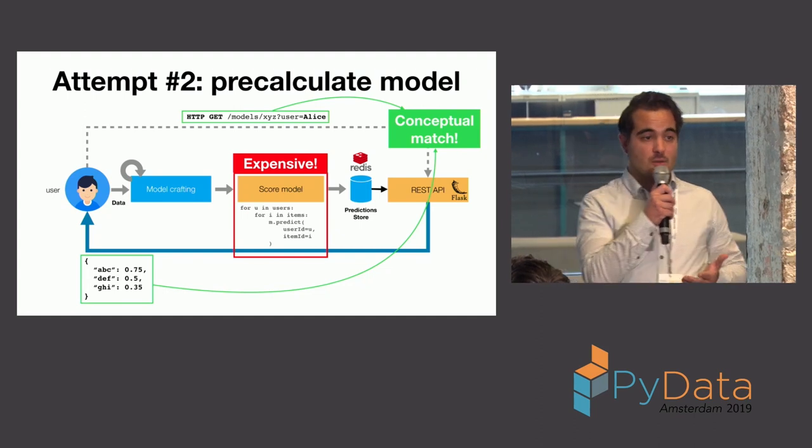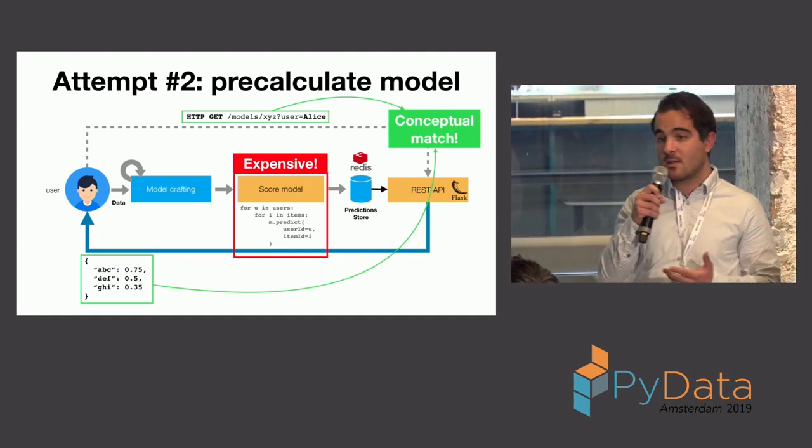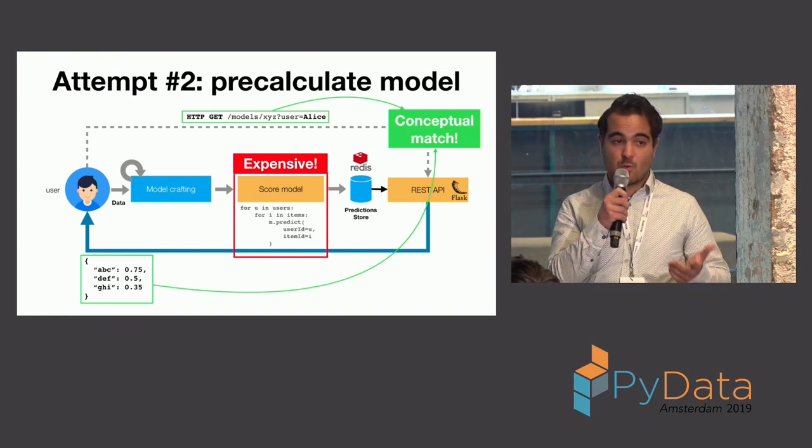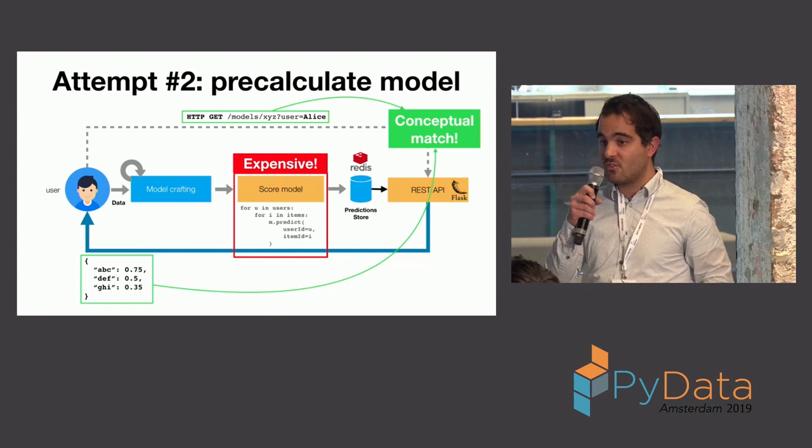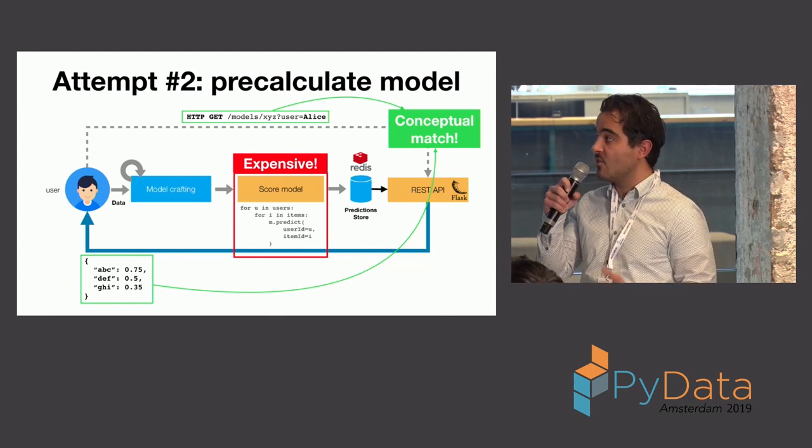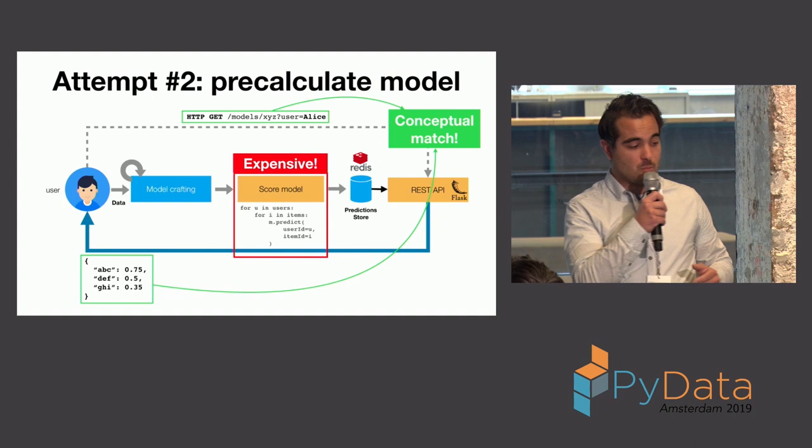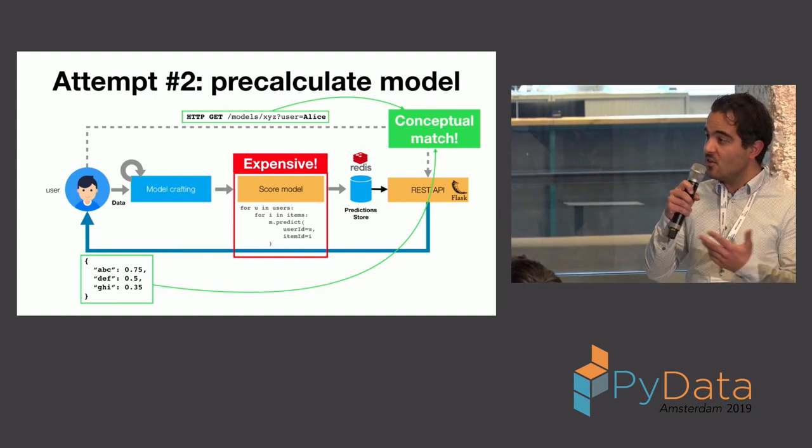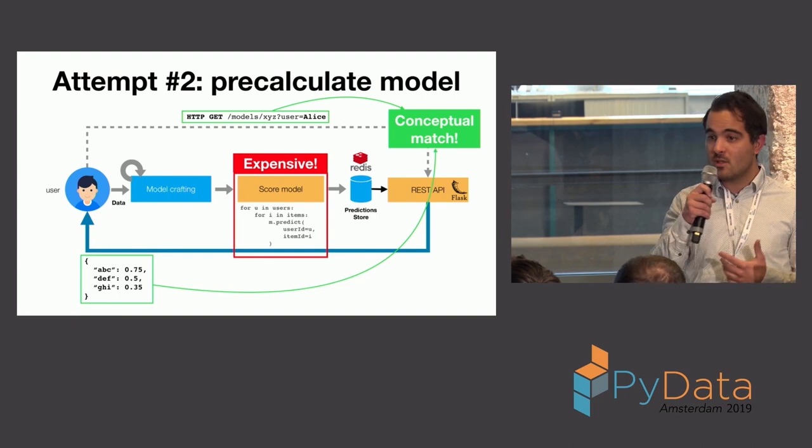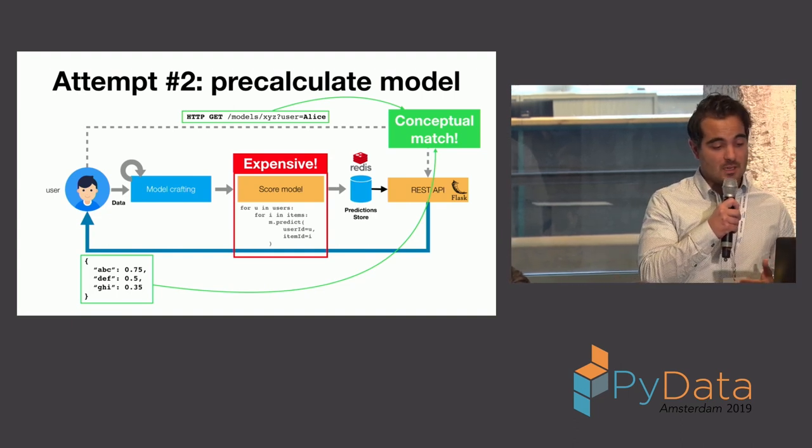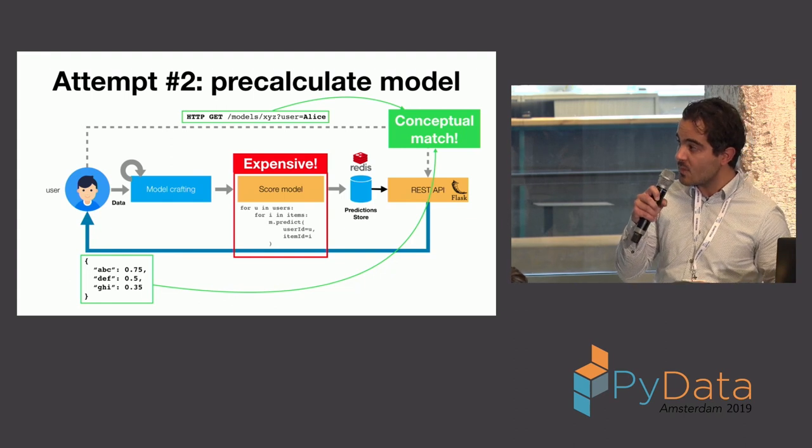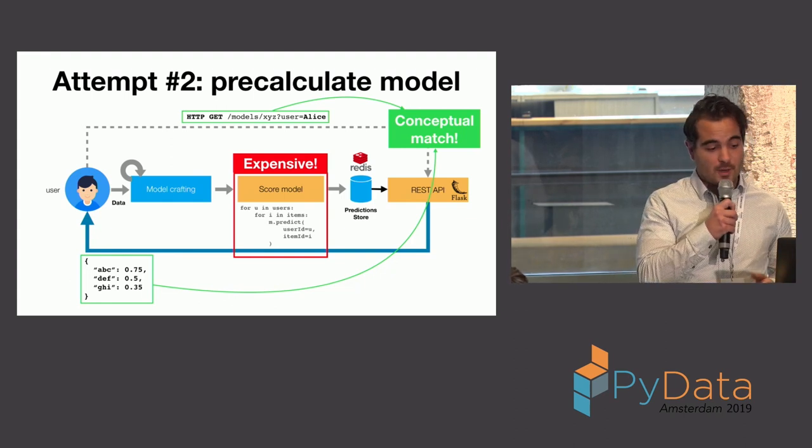But then, when I think about it, I don't really need to do that either. I can just take, well, I can still, I need to still calculate them, but I can take the top 10 or the top 20 and store those in my prediction store or my Redis. And basically, when I do this, I have these nice properties of guaranteed latency for easy scalability to be able to deal with very large peaks in traffic while still maintaining a conceptual match to what I was trying to achieve.